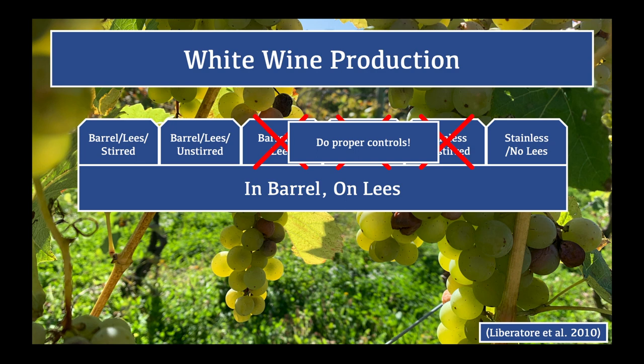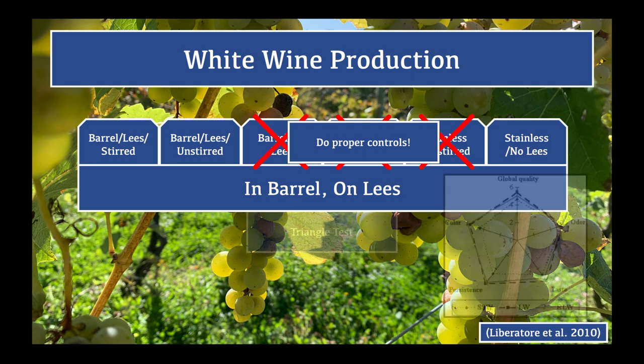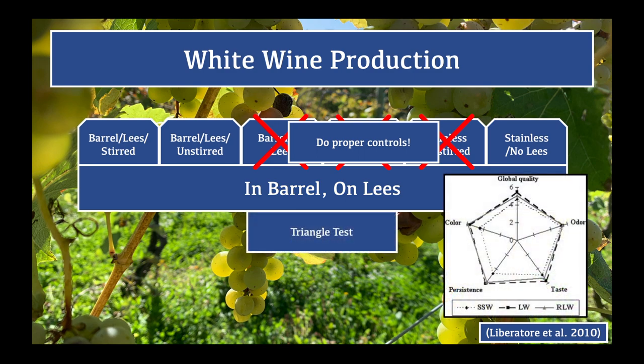The authors had 10 experienced judges do two tests. The first asked the judges to score wine color, odor, taste, persistence, and overall quality on a scale of 0–7. The second was a triangle test to see whether the three wines were differentiable. The judges scored the barrel-and-lees wines higher in every single category, and the triangle tests showed that the judges could pick out the different wines in every case — these wines were significantly different. Notably, the undisturbed lees wines scored highest in every single category but color.